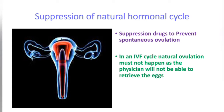The next step is suppression of the natural hormonal cycle. Suppression drugs are given to prevent spontaneous ovulation. In an IVF cycle, natural ovulation must not happen as the physician will not be able to retrieve the eggs, so suppression of the natural hormonal cycle is done.